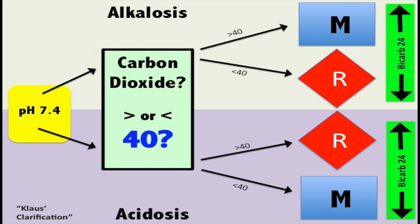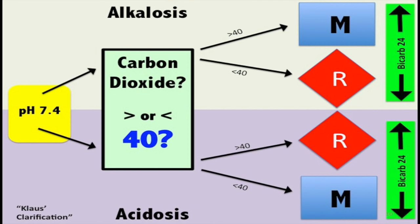This chart is called Klaus's clarification, shared by a conference attendee. For acid-base on your boards: normal pH is 7.4, carbon dioxide is 40, bicarb is 24. Go by the pH — is it higher or lower, alkalotic or acidotic? Then check CO2 using a base normal of 40. The mnemonic is Mr. Ronald McDonald — blue boxes are M (metabolic), red triangles are R (respiratory). The green boxes show what bicarb is going to do. Based on this chart, you'll have a very good idea of what's going on with acid-base.